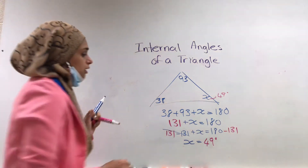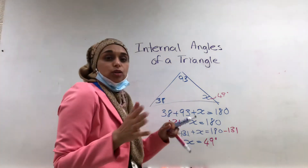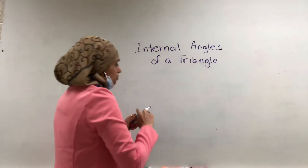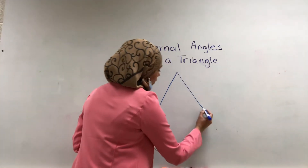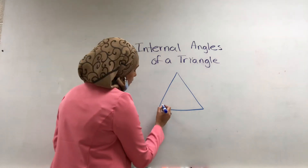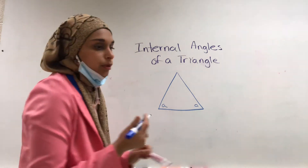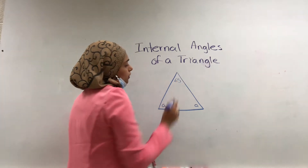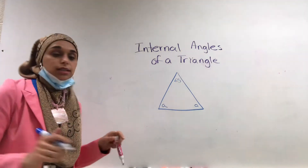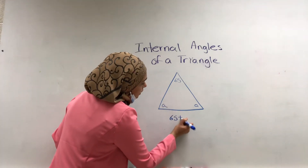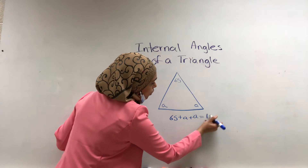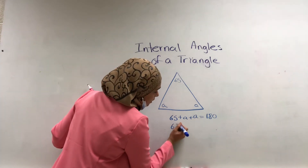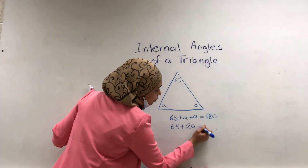Now we're going to do an isosceles triangle. An isosceles triangle is when two angles are valued at the same number. Let's say these two angles are the same, and the third angle is 65. Same process: 65 plus A plus A equals 180. Putting like terms together — my like terms are the A's — so it becomes 65 plus 2A equals 180.